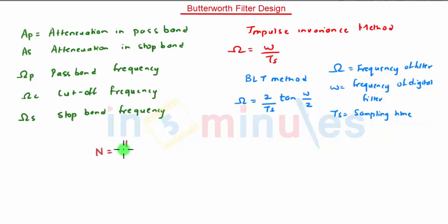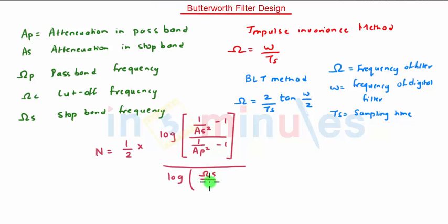N is equal to half into log of 1 by AS square minus 1 upon 1 by AP square minus 1. The whole divided by log of omega S upon omega P.